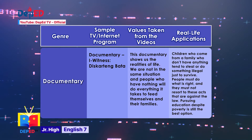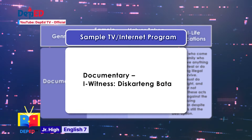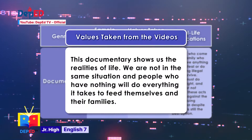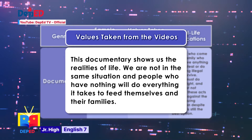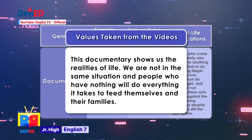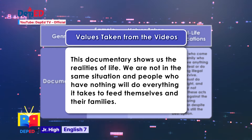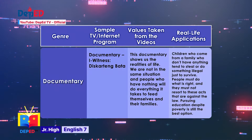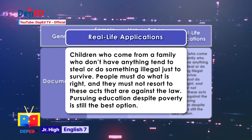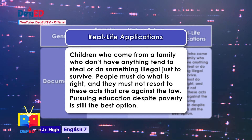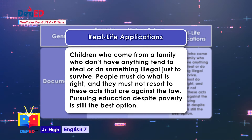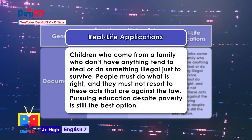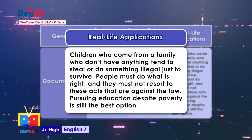The third genre is a documentary. The sample program is the documentary Eyewitness — Discarding Bata. The introductory values show us the realities of life: we are not in the same situation, and people who have nothing will do everything it takes to feed themselves and their families. The real-life application is that children from families with nothing tend to steal or do something illegal just to survive. People must do what is right, and pursuing education despite poverty is still the best option.